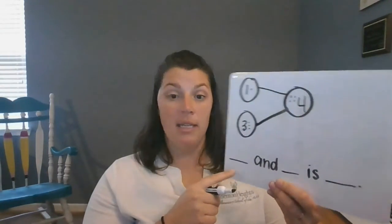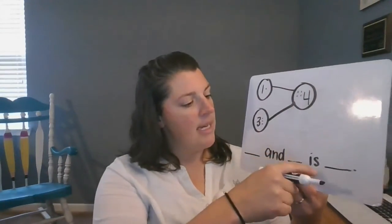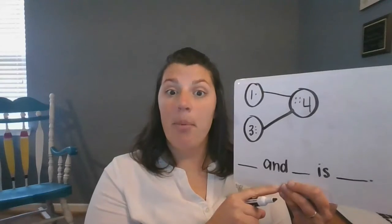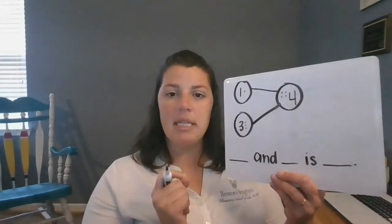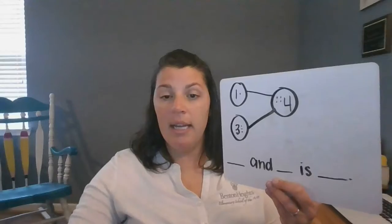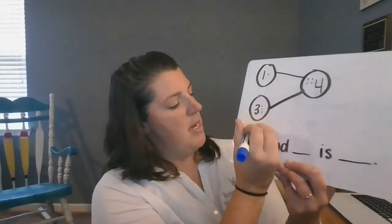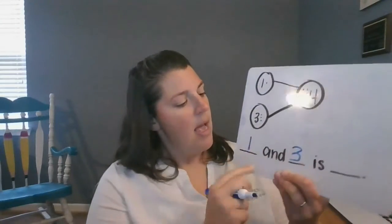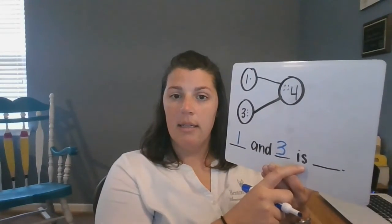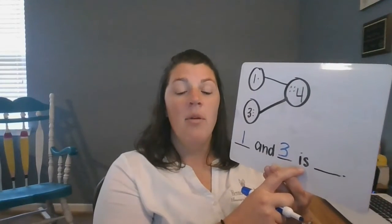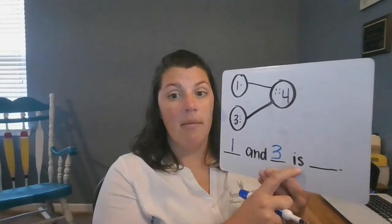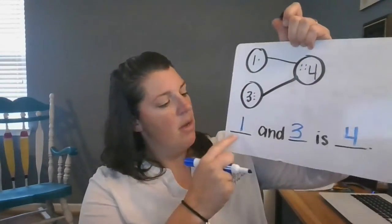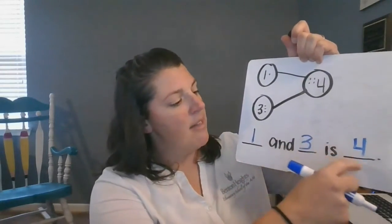Okay, so how are we going to fill in our sentence? Blank and blank is blank. Well, this and tells me what? That I'm putting it together. So what did I put together here? I put together one and three. And then I have the word is. What did I get when I put together one and three? I put together one and three and got four. Read it with me. One and three is four.